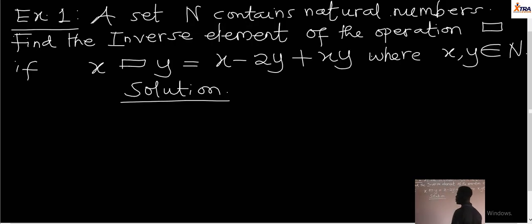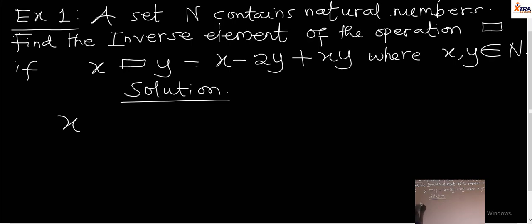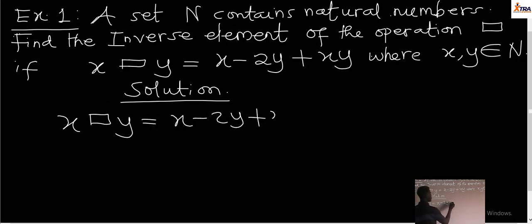We'll be looking at an example. We have a set N containing natural numbers, and we are asked to find the inverse element of the operation where X operation Y is equal to X minus 2Y plus XY, where X and Y are both elements of the set N of natural numbers. We present our operation: X operation Y gives us X minus 2Y plus XY.